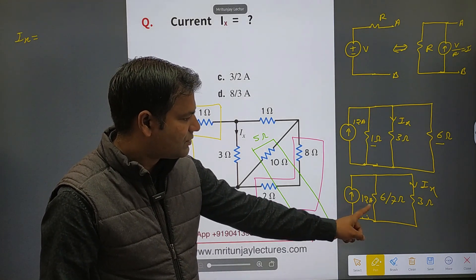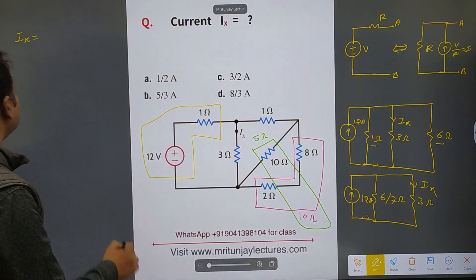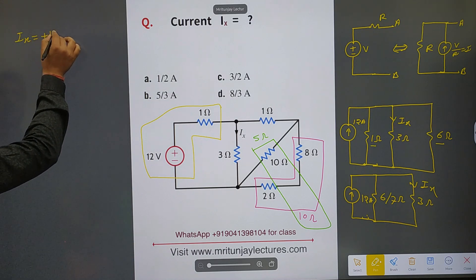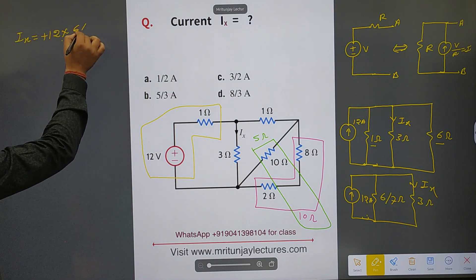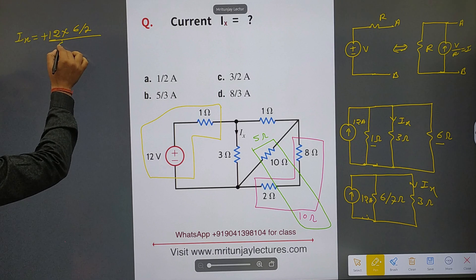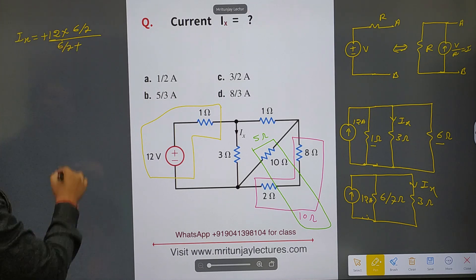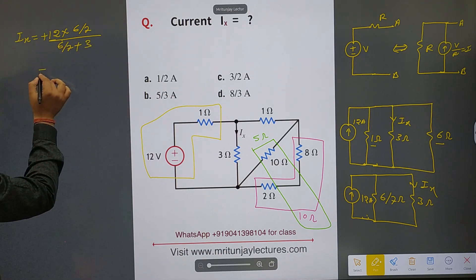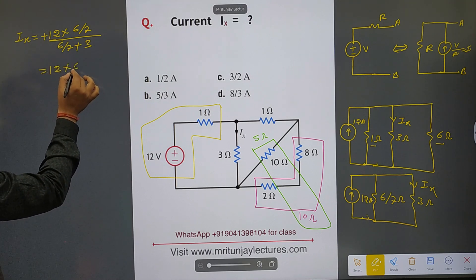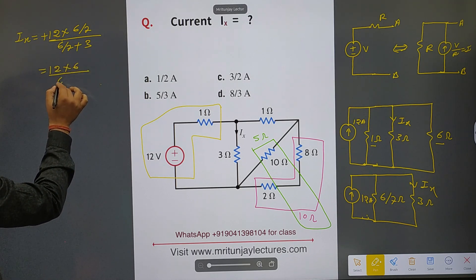12 plus 12 into 6 by 7 ohm, into 6 by 7 ohm, divided by 6 by 7 plus how much? 3 ohm. So 12 into 6 divided by 6 plus...